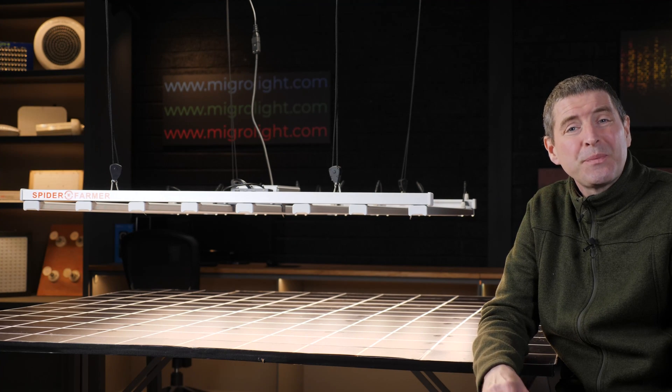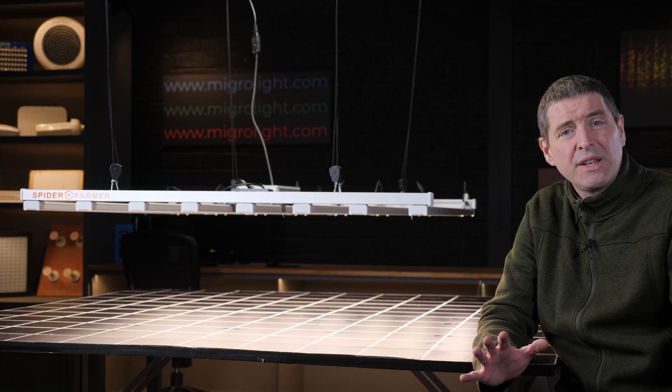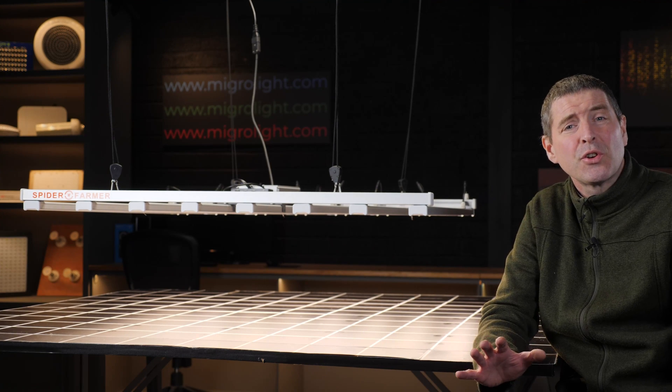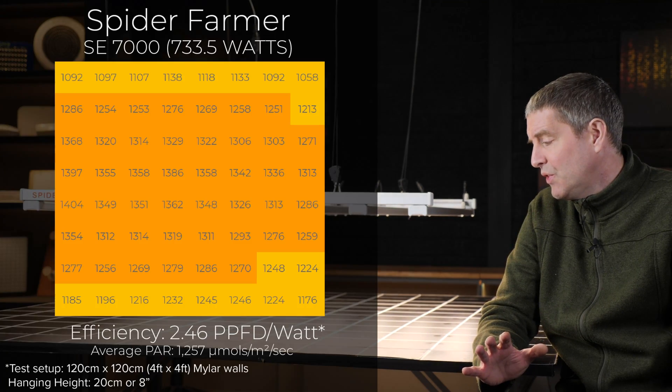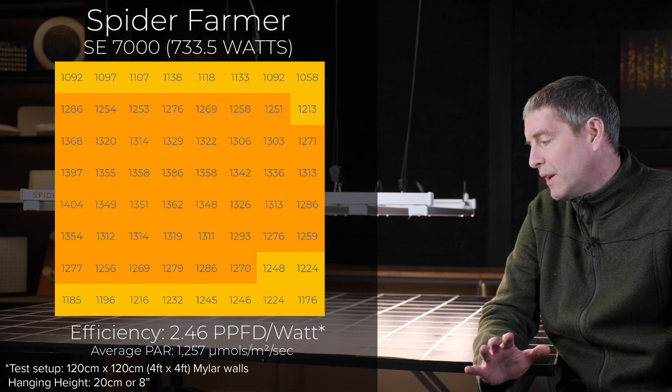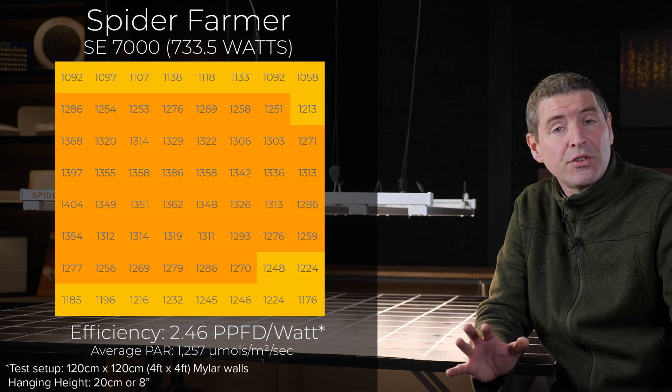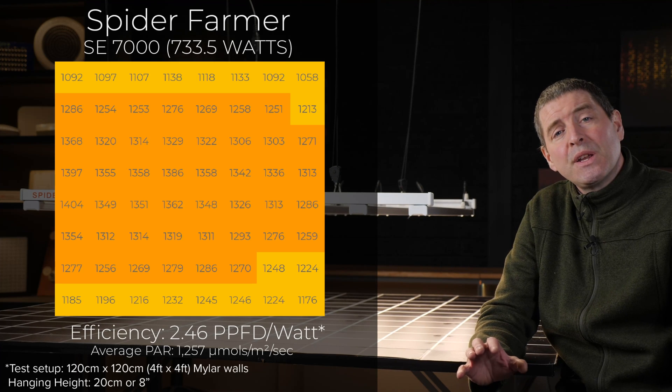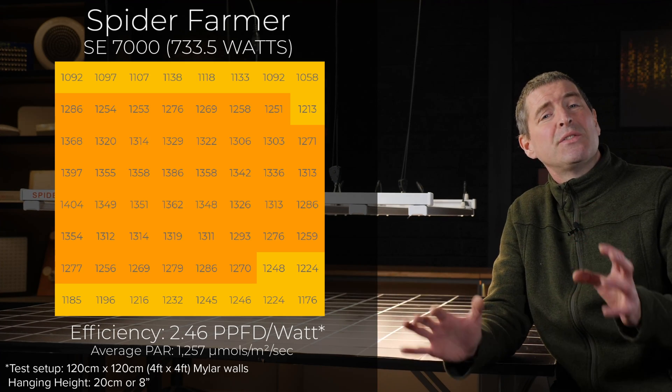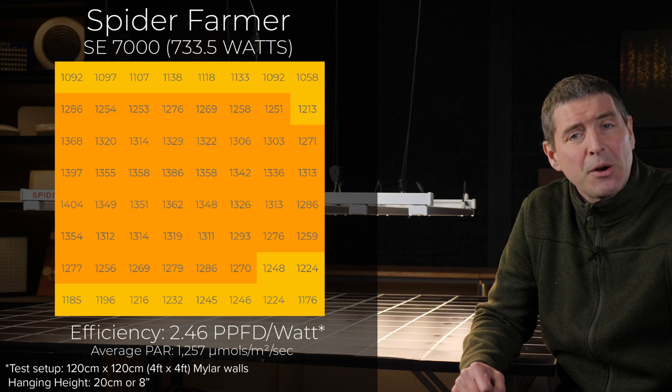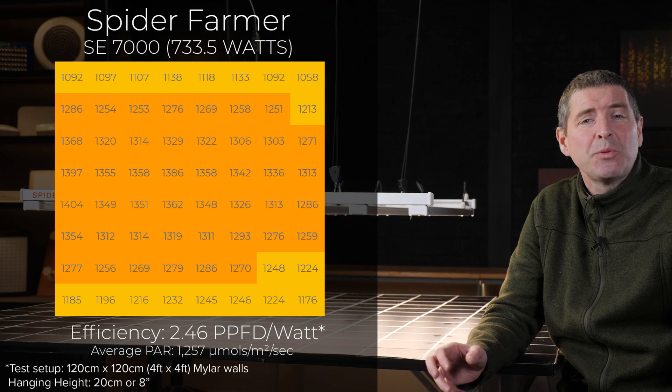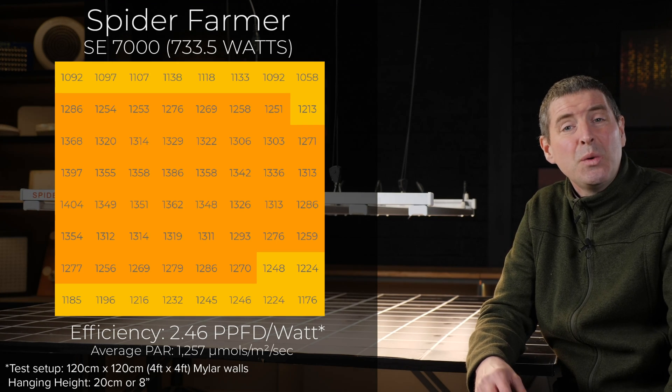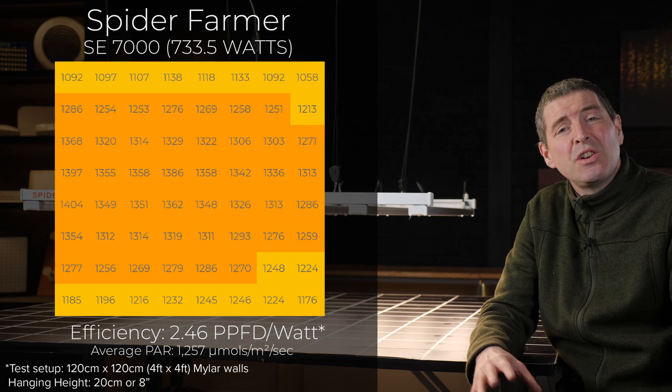In terms of performance, it's an excellent performer. As I said, in the 4x4, it averages a high nearly 1300 micromoles per meter squared per second. And that results in a system efficiency with the 730 watts drawn, the total power output reaching the plant canopy divided by the power consumed. It's a system efficiency of 2.46 micromoles per watt or usable PPF per watt, which is really good, especially for this price point.